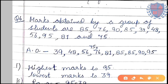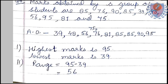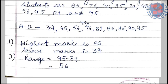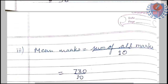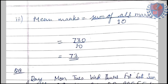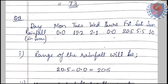Question 6: marks obtained by a group of students are given. We arrange them in ascending order. Highest marks obtained is 95, lowest is 39 — the arrangement makes it easier to identify these. The range is the difference between highest and lowest marks. Mean marks = sum of all marks divided by 10, giving a mean of 73.